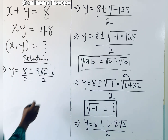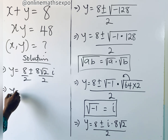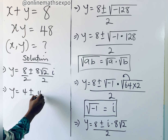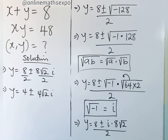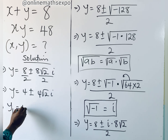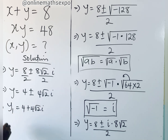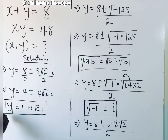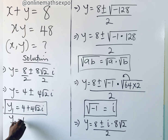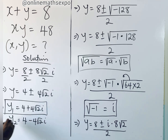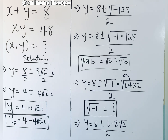Dividing each term in the numerator by 2, we get y equals 4 plus or minus 4 root 2 i. So the two values of y are: y₁ = 4 plus 4 root 2 i, and y₂ = 4 minus 4 root 2 i.